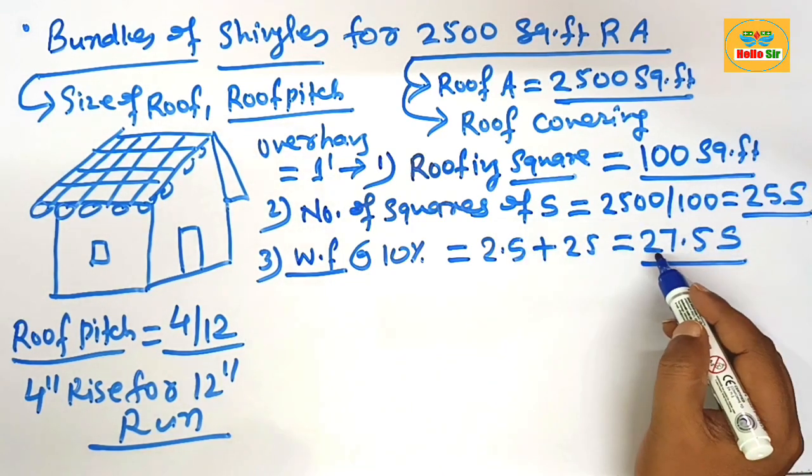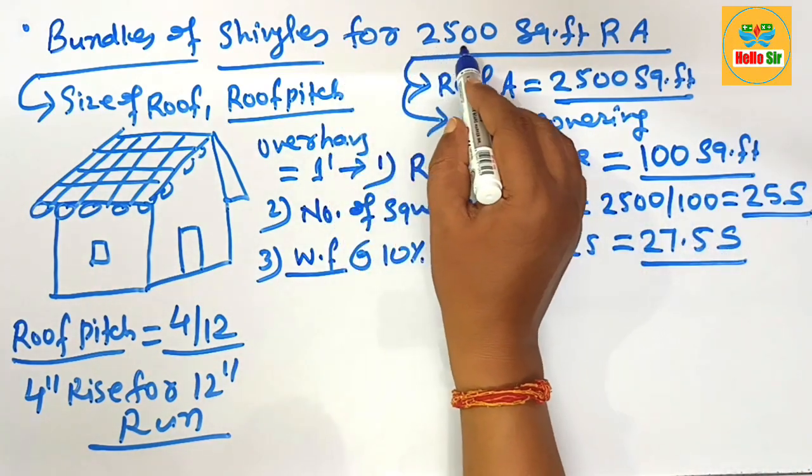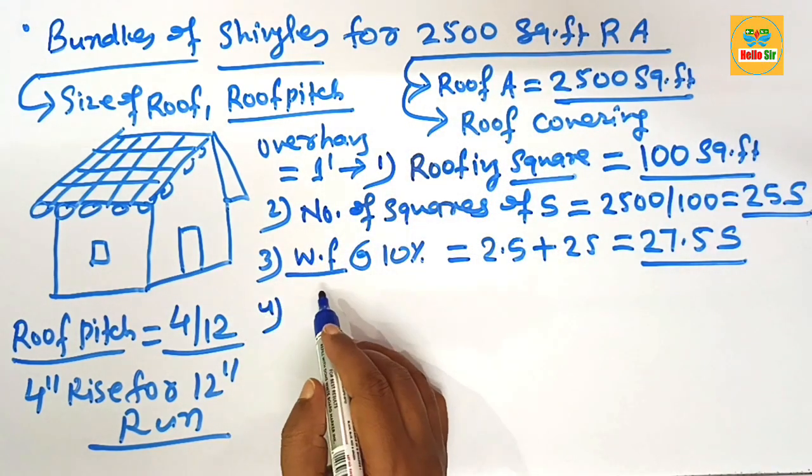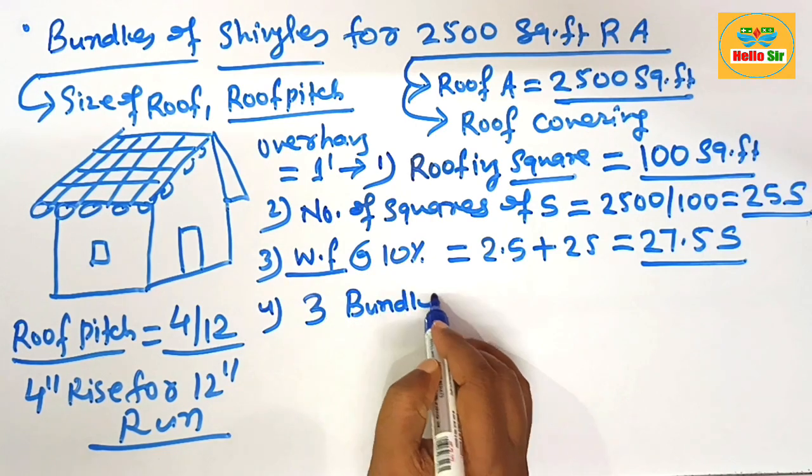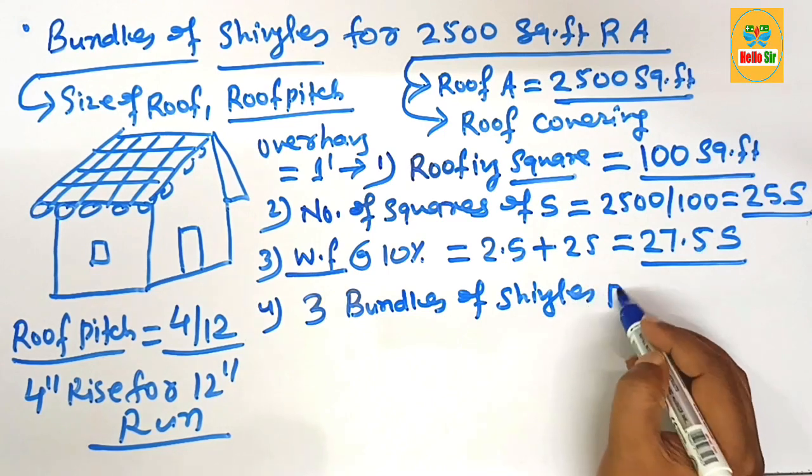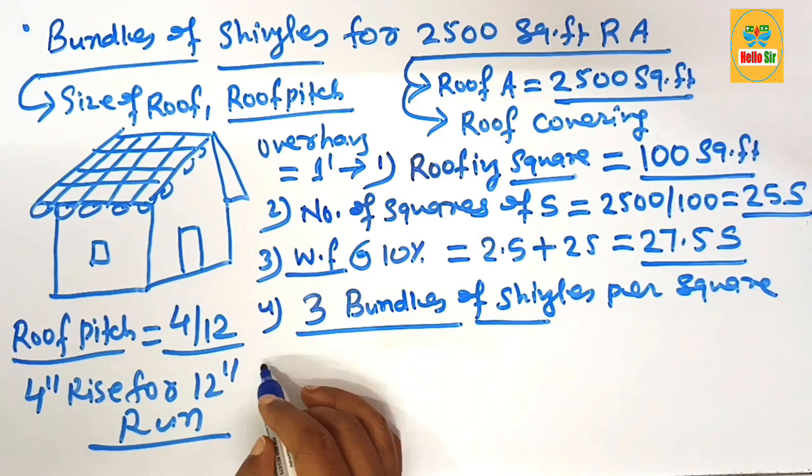It means you need approximately 27.5 squares of shingles to cover 2500 square foot roof area. And as a general guideline there are 3 bundles of shingles per square. It means in one square there are 3 bundles of shingles.